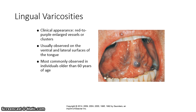Lingual varicosities have a clinical appearance that is red to purple, and they are enlarged vessels or clusters. They are usually observed on the ventral and lateral surfaces of the tongue, and most commonly observed in individuals older than 60 years of age.